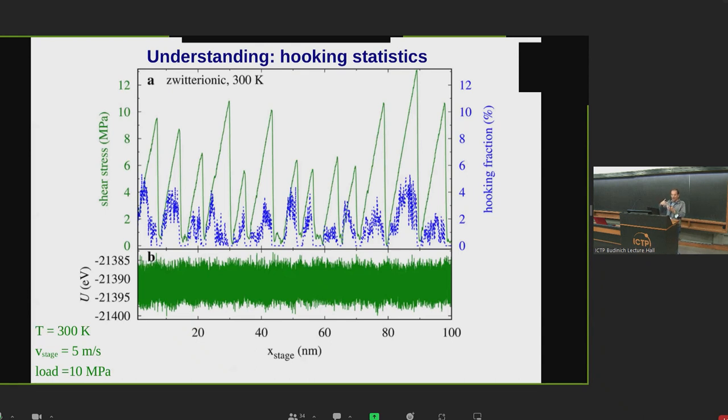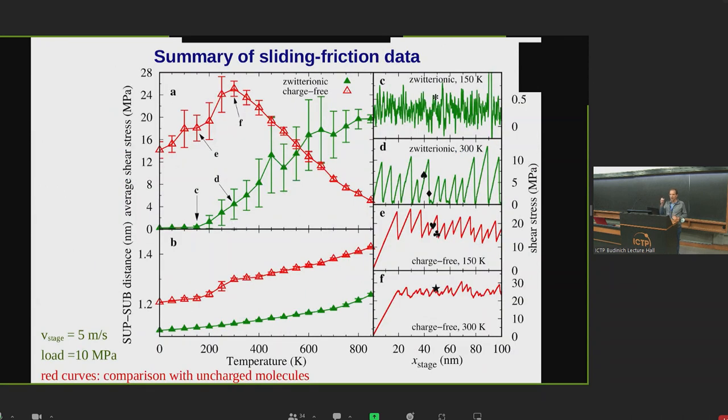We also computed this hooking, the percentage of those molecules that get entangled from one layer to the next. Indeed, there is a clear correlation of the stick-slip friction force with the percentage of molecules that get hooked. By the way, we wondered how much these charges are important. So we did the whole simulations with no charges, which is the red curve here. You see that there is still some increase of friction with temperature at low temperature, but the phenomenon is much less clear. There is already stick-slip at very low temperature. The reason is that without the charges, those layers don't order so efficiently. The charge is quite helpful in ordering those layers and keeping them flat at low temperature.